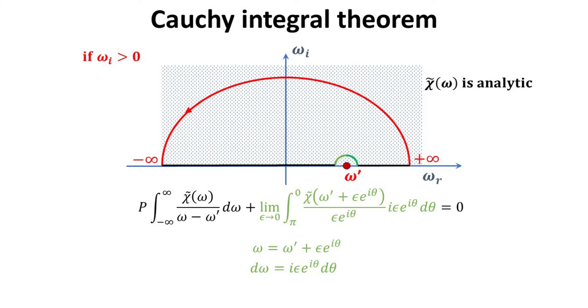We can simplify the small arc integral by canceling the common complex exponential terms. Now, setting epsilon to zero as the limiting case, it simplifies to the following.